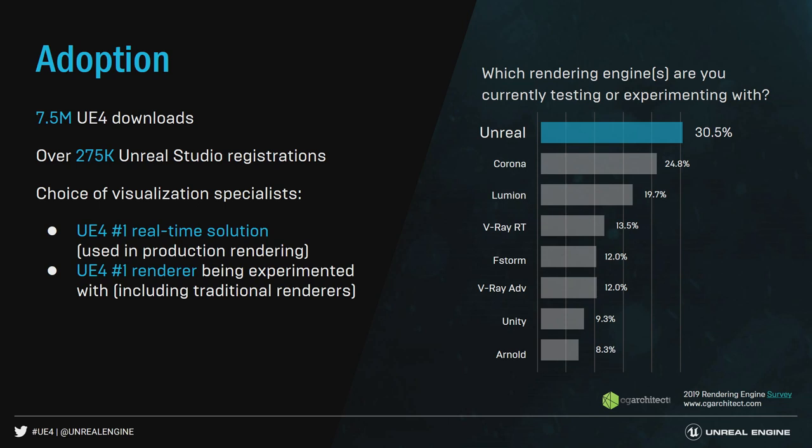Looking at the adoption of Unreal Engine — based on surveys, Unreal Engine is the most used engine for experimenting with real-time rendering, and the engine of choice for people jumping into the real-time rendering world. There are over seven and a half million Unreal Engine downloads, and Unreal Studio with Datasmith is also fully free. We're nearing 300,000 Unreal Studio registrants now as well.